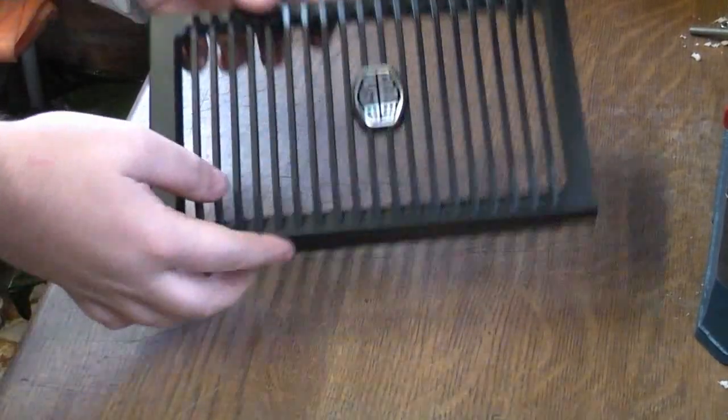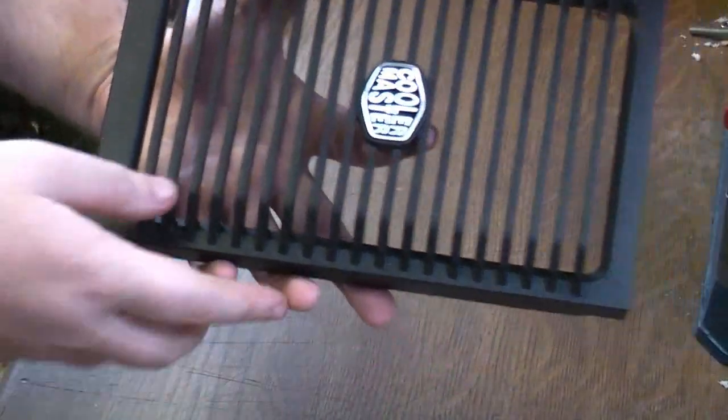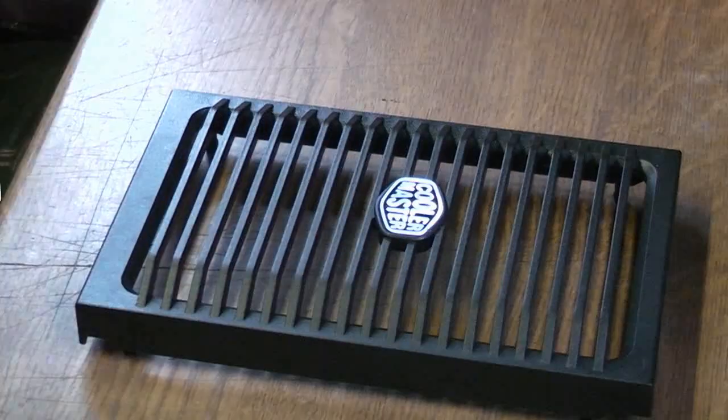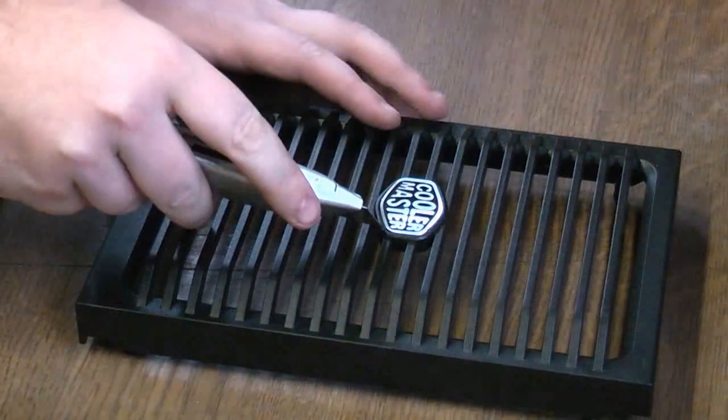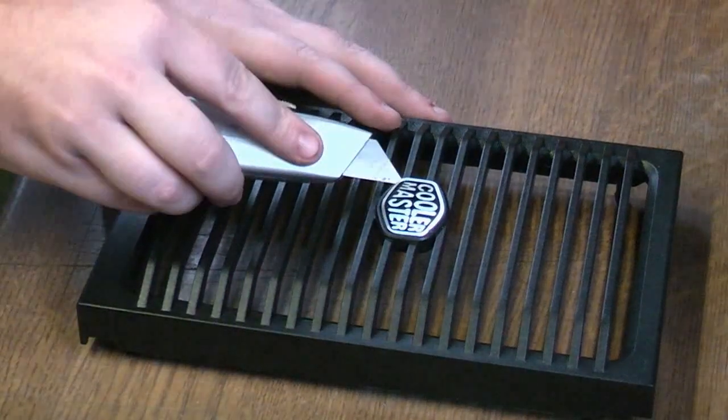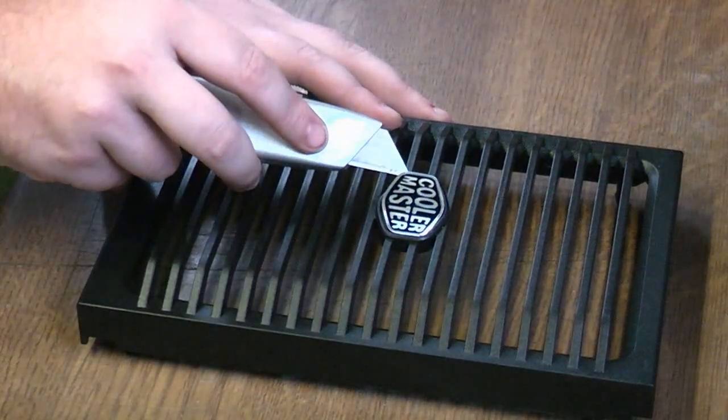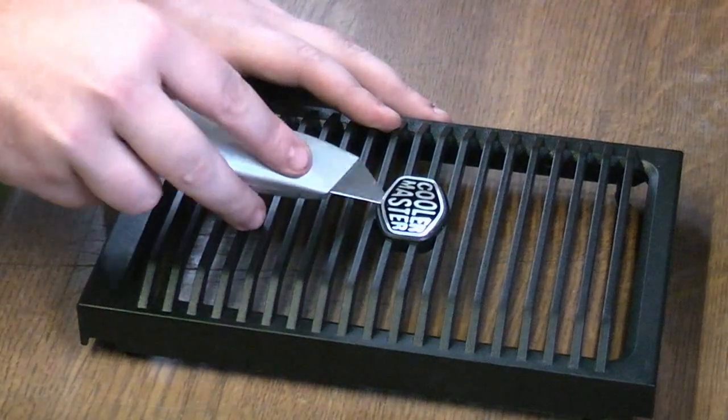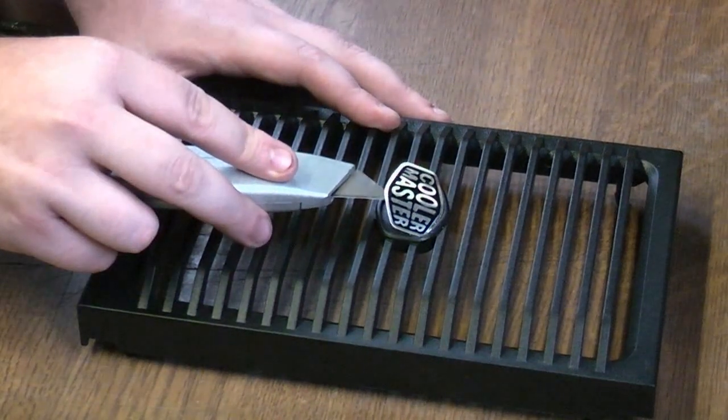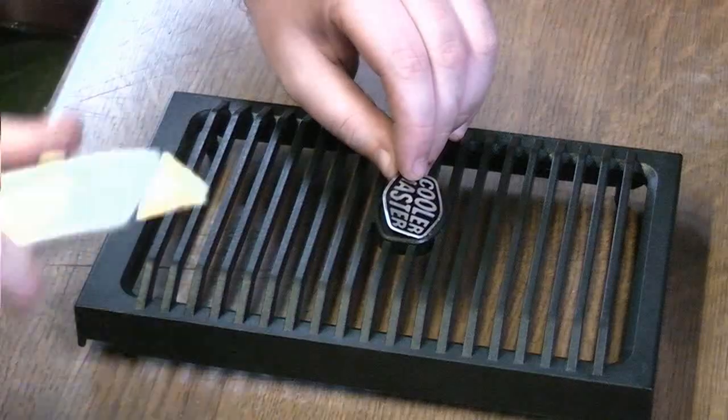Next up is the centre section of the front bezel with the lovely machined Cooler Master badge which has been put in and I'm going to take out. Just a case of getting a knife blade, scalpel, whatever, underneath one edge and just peeling it off. It is only glued on with a bit of glue rather than anything else.